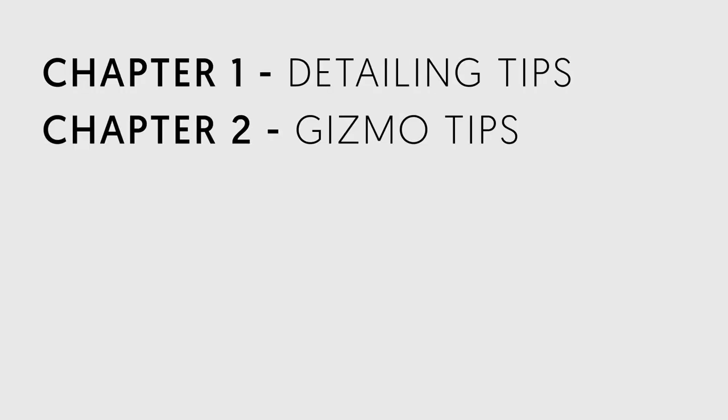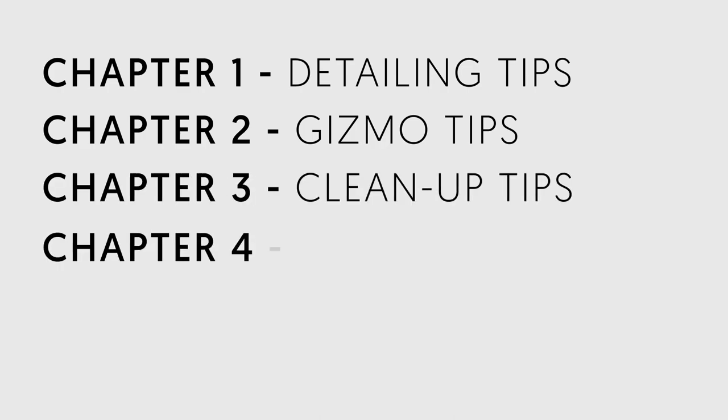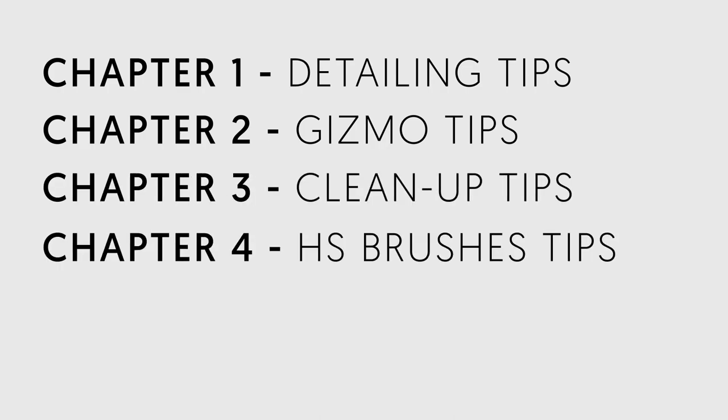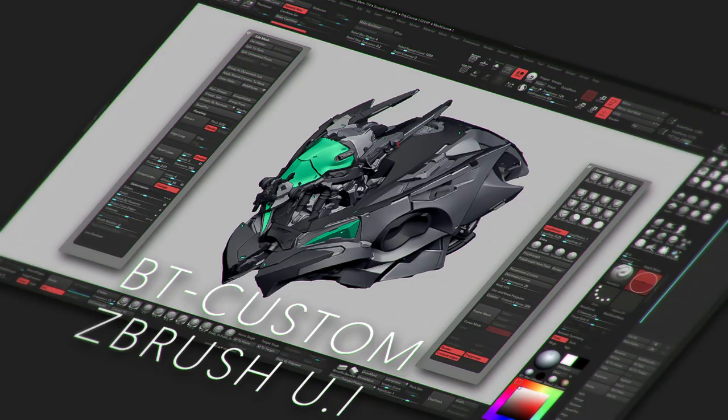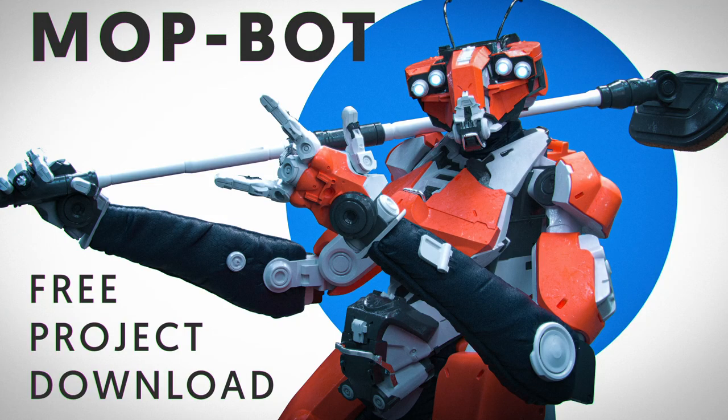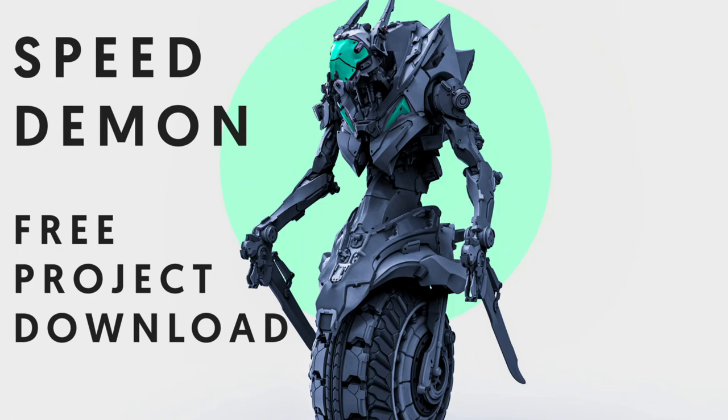Hey there, welcome to Volume 2. This summer round we're going to tackle some tips regarding detailing, gizmo deformers, cleaning up shapes and even more hard-surface brushes and techniques. Like last time, this video is divided into chapters and timestamps so you can just pick and choose what interests you. You can also go to my ArtSense install page where you can grab my Cproducer interface along with all of my decimated projects if you want to take a closer look at them — it's all for free. There's a lot of content to go through, so let's jump in.